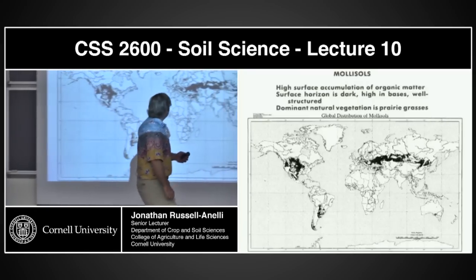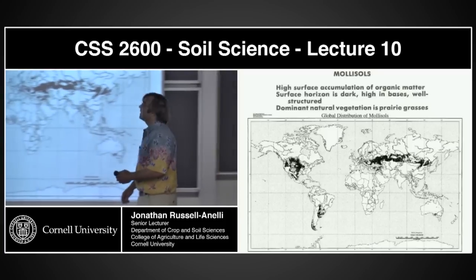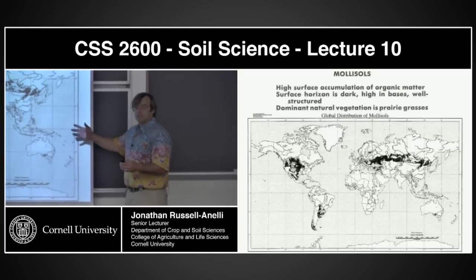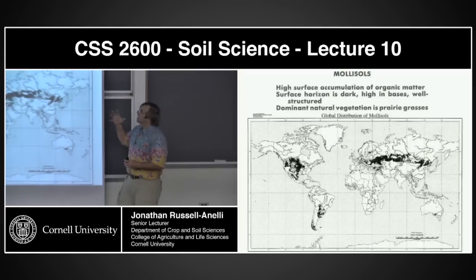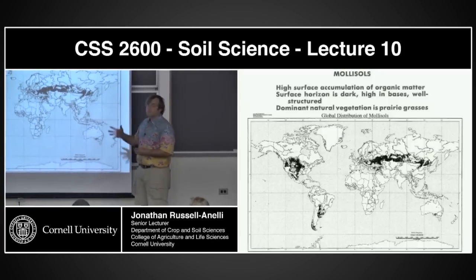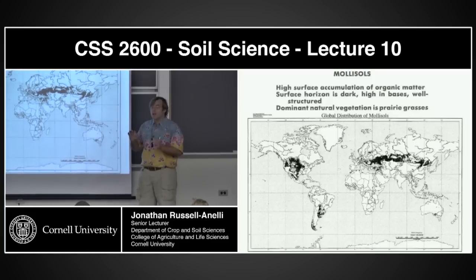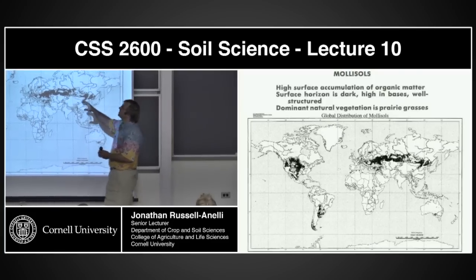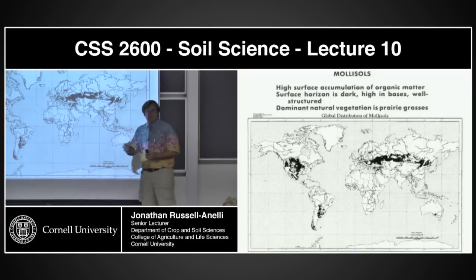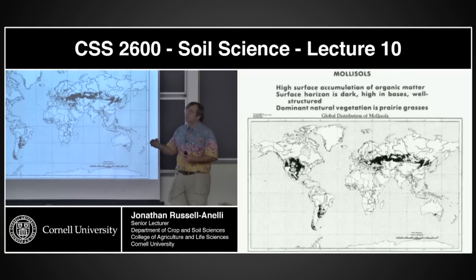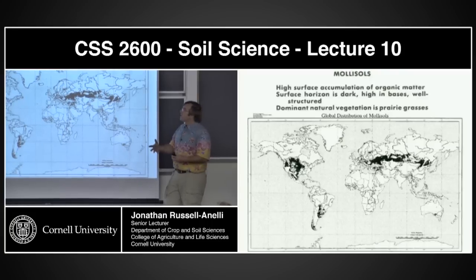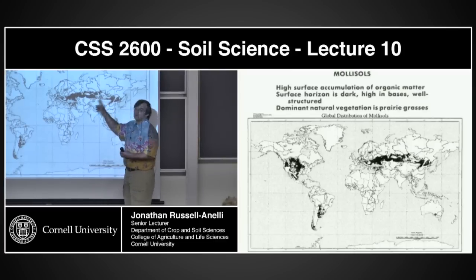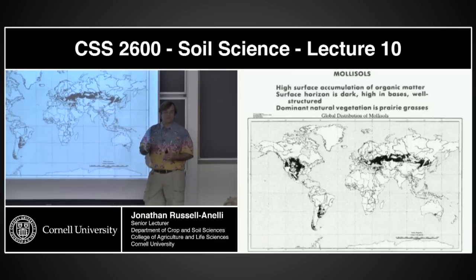Our next soil order is Mollisols. These are soils across the landscape where the diagnostic feature is really high surface accumulation of organic matter. These are not Histosols though — they are still mineral soils. The surface horizons are dark, high in bases, high in nutrients, and well-structured. If they have high organic matter, you would expect good structure. The dominant vegetation in these soils is prairie grasses — these are grassland soils.